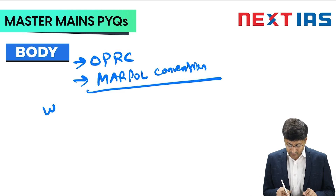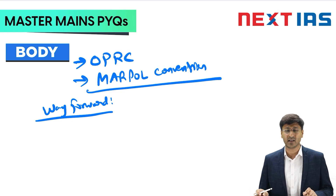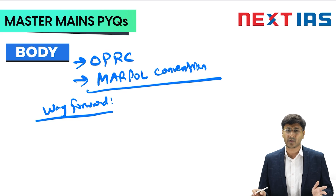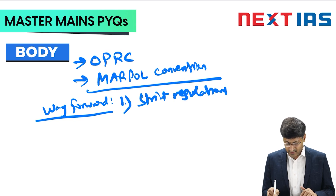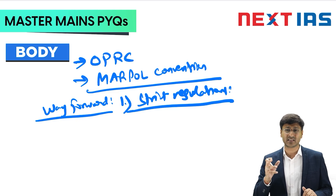For the way forward: despite all efforts, oil spills have occurred in Mumbai in 2010, Chennai in 2017, and in Mauritius, Spain, and the Red Sea in 2021. Given India's strategic position in the Indian Ocean, it remains prone to such incidents. The first way forward is strict regulations — the government needs to enforce stringent guidelines for offshore drilling, pipeline leakages, and illegal dumping.